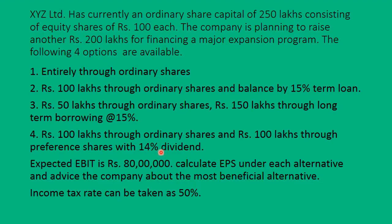In the fourth option, instead of a term loan, they are considering preference dividend. Out of these four options, you have to decide which one should be selected. The selection is based on the expected EBIT — earnings before interest and tax — which is 80 lakh rupees. Calculate EPS (earnings per share) under each alternative and advise the company about the most beneficial one. The income tax rate is 50%.